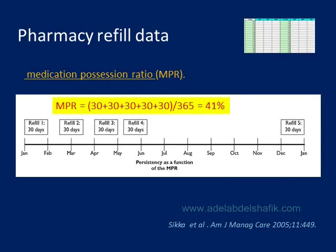One term used is medication possession ratio. This patient gets a refill, misses a couple of days, then another refill, misses it, refill, misses it — all this time missing. The drug is sufficient for 30 days, so over the year he gets the drug five times. He possesses the drug 41% of the time. This is the meaning of medication possession ratio.